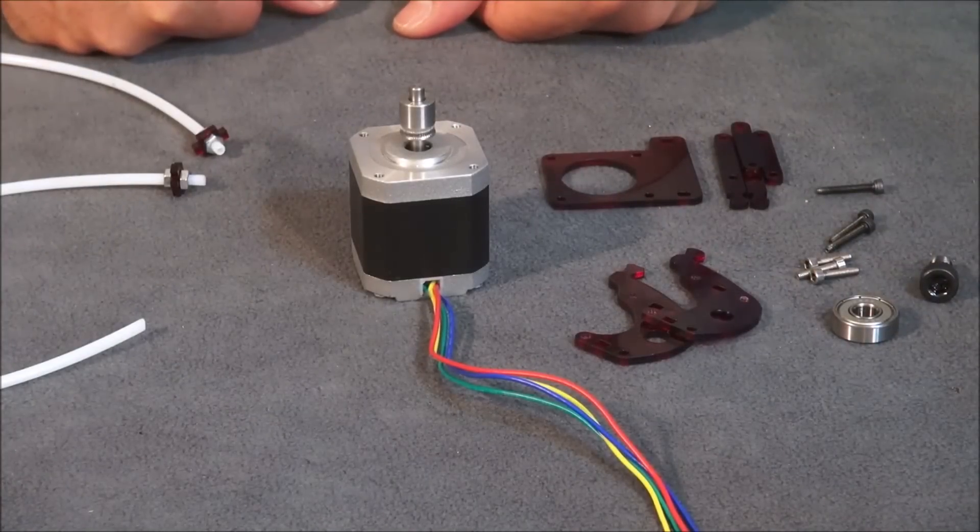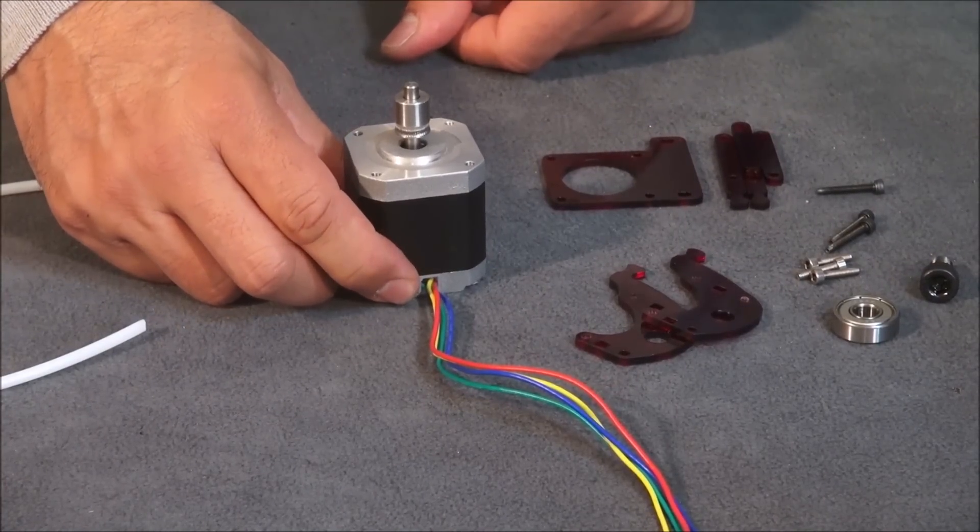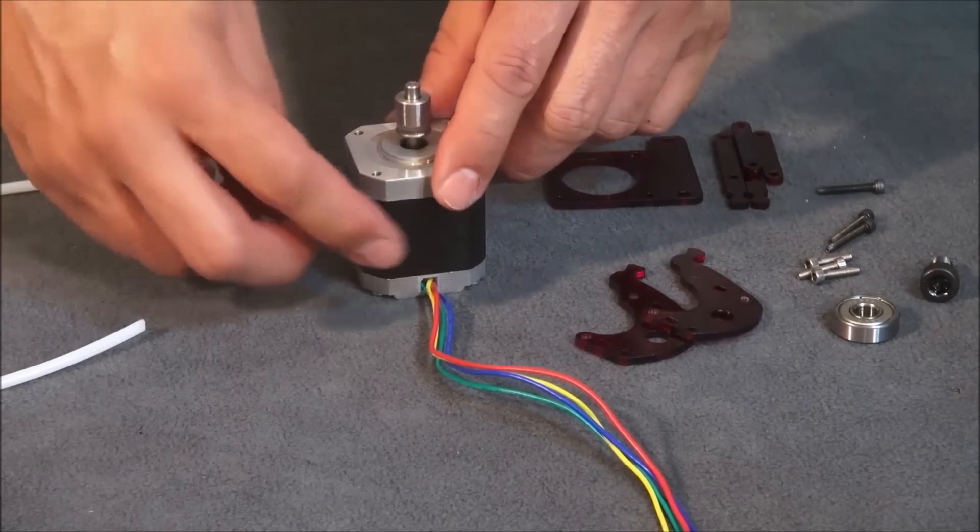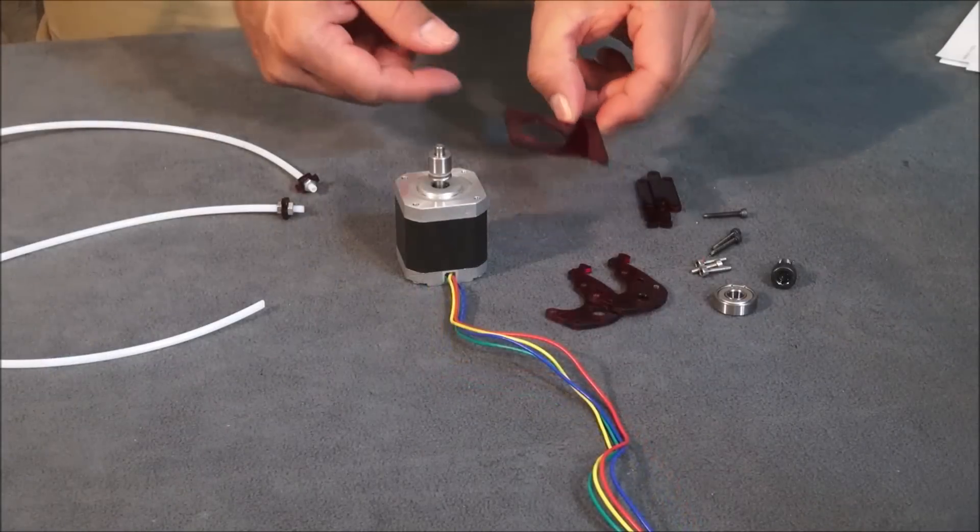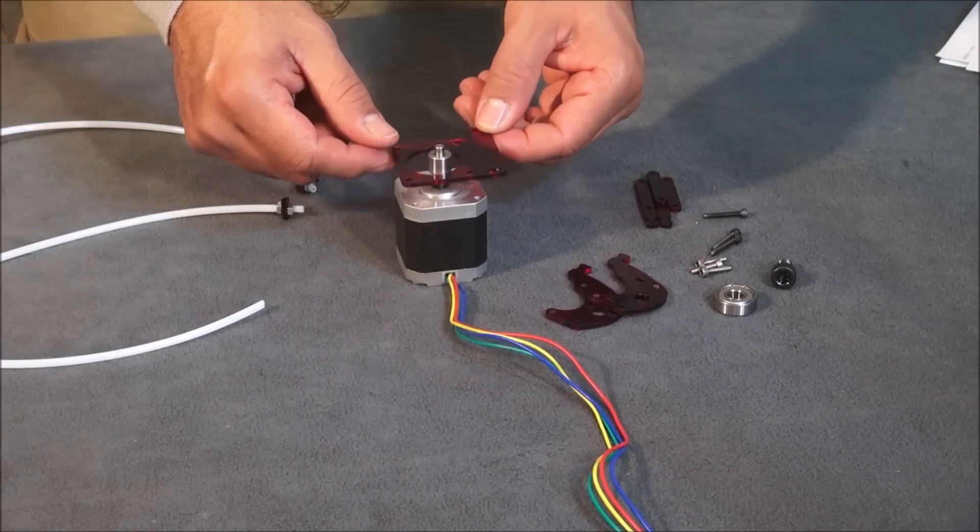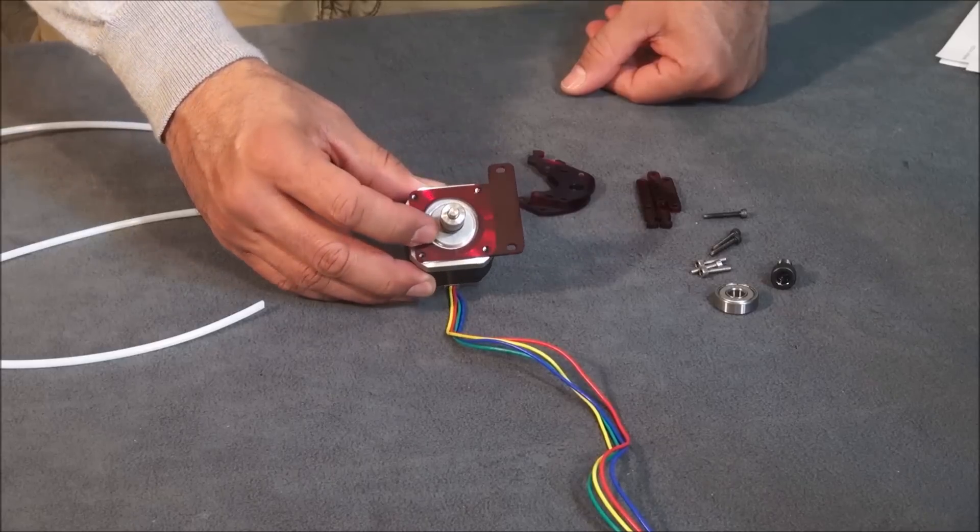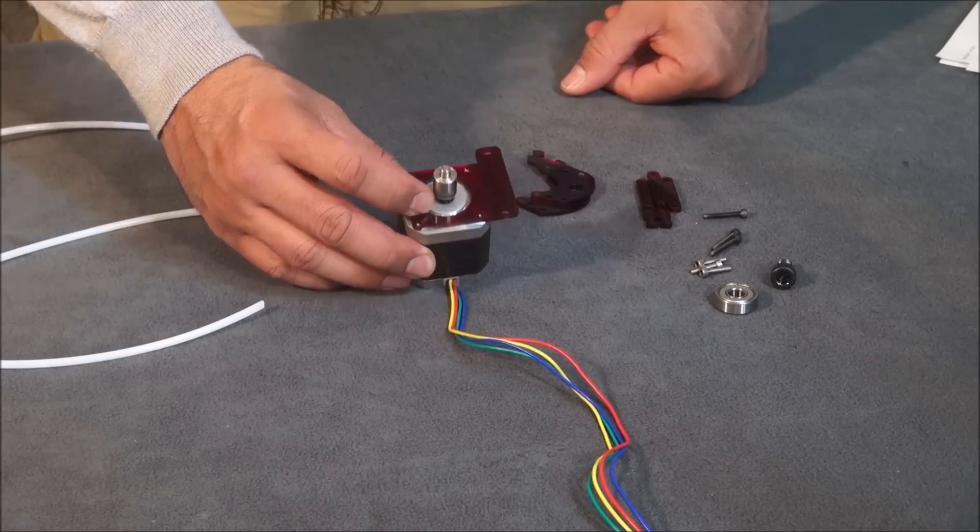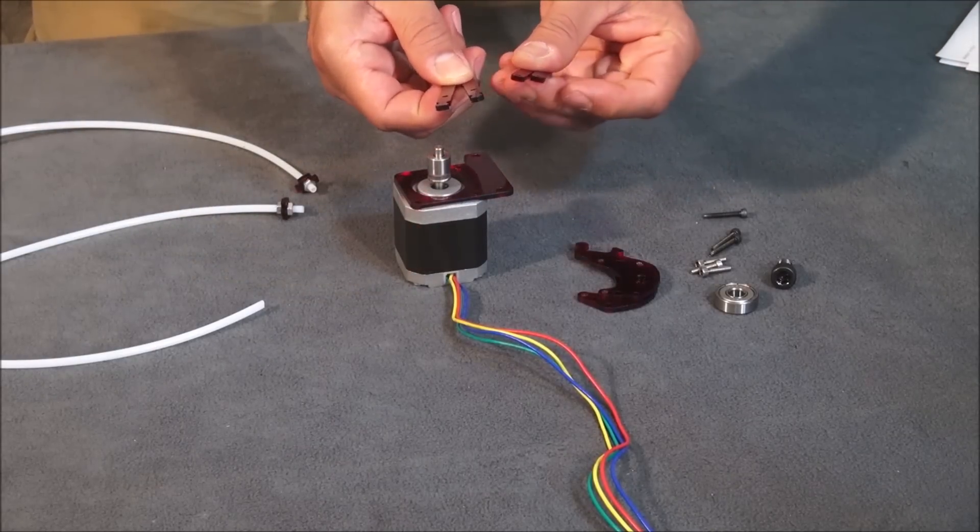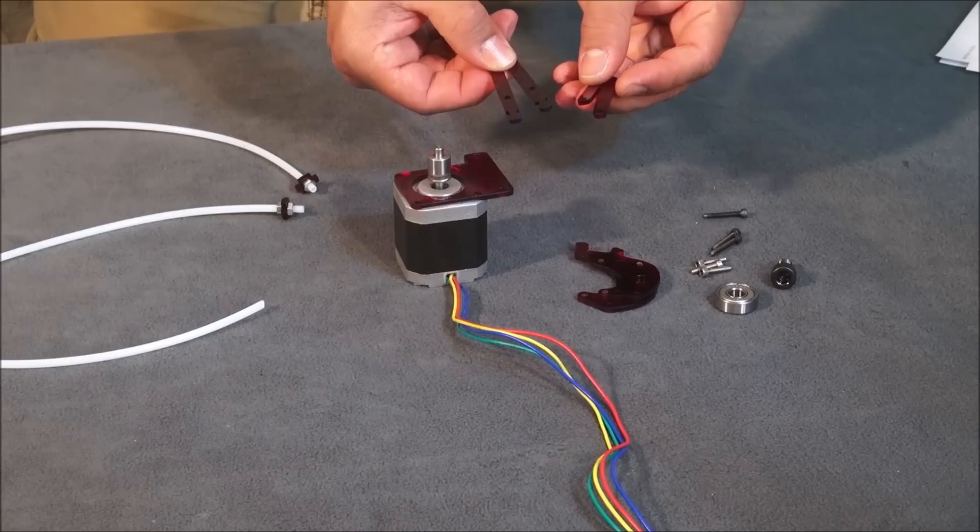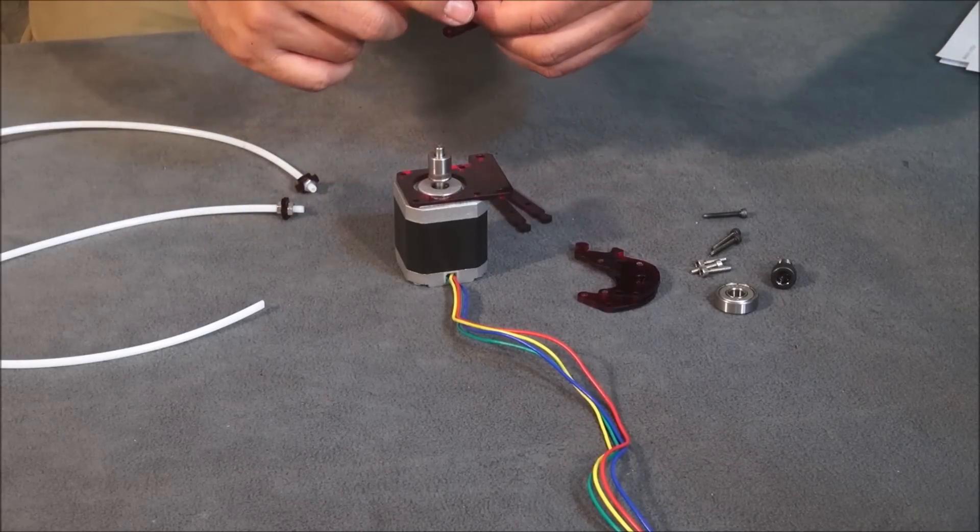Now for the actual assembly of your extruder components. Placing your motor in this orientation, I'm going to work with my wires pointing away from me. First, we're going to take this acrylic piece and line it up with your holes. Next, we'll take these acrylic pieces and we're going to stack them on this side of the motor.